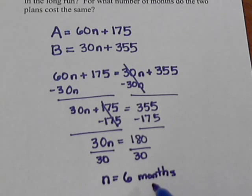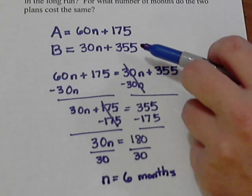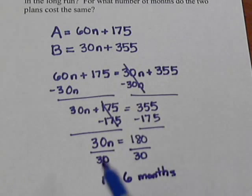And then dividing by 30, we get n = 6. Okay, so that tells us in six months time both plans will be the same.